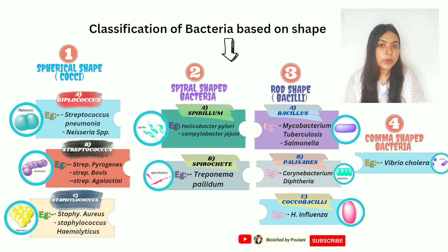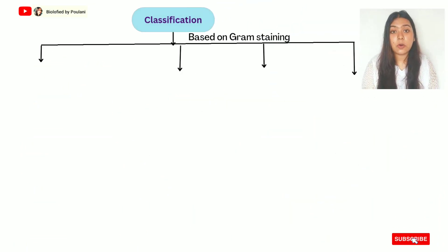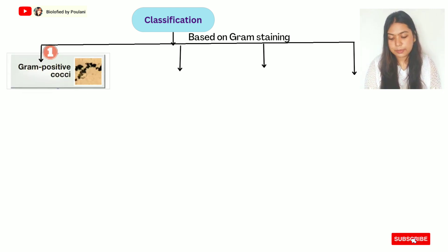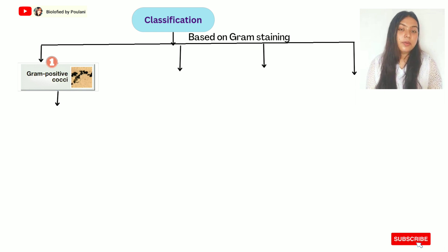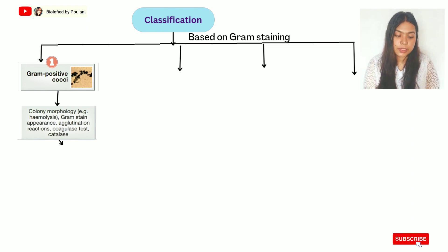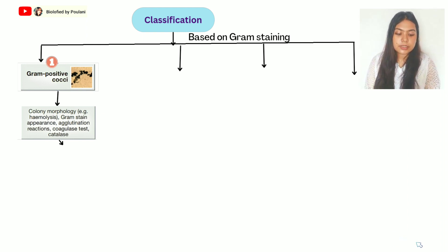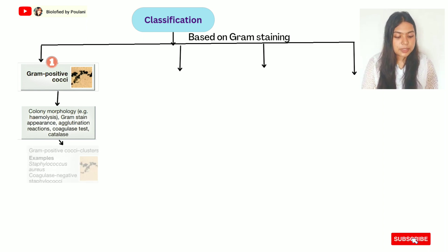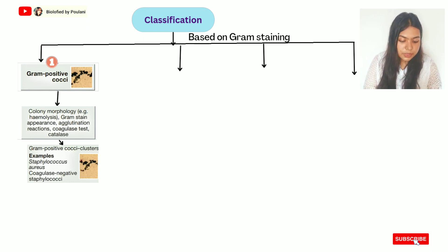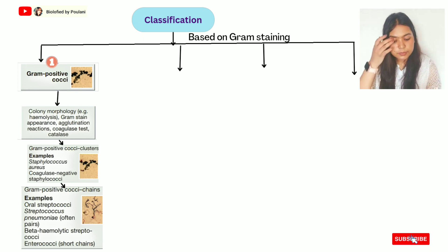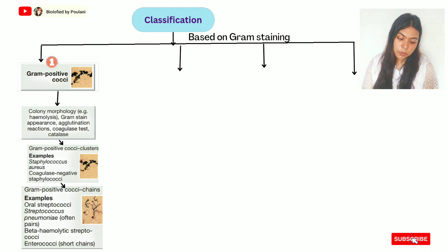Classification based on gram staining: in gram staining, we identify gram-positive and gram-negative bacteria. Gram-positive cocci include those seen in colony morphology under a 100x or 40x microscope. Examples are Staphylococcus aureus and coagulase-negative staphylococci. Gram-positive cocci in chains include oral Streptococcus, such as Streptococcus pneumoniae, which occurs in pairs, along with beta-hemolytic Streptococcus and Enterococcus in short chain form.